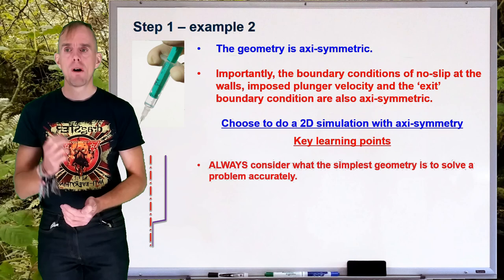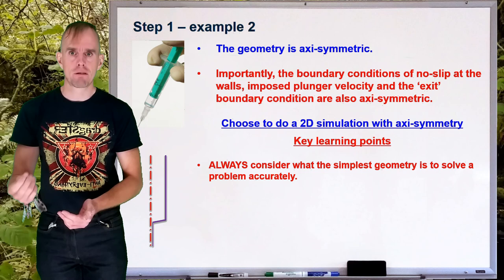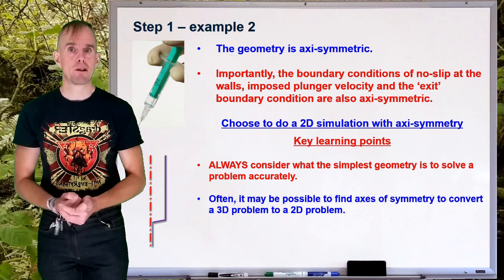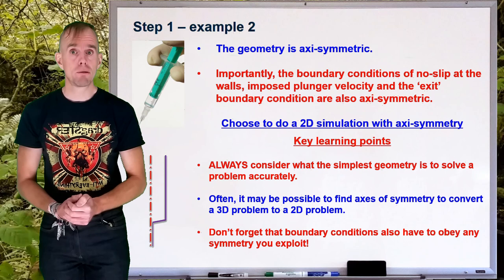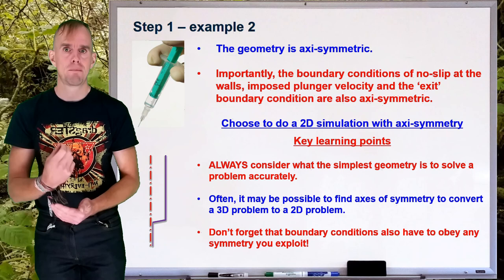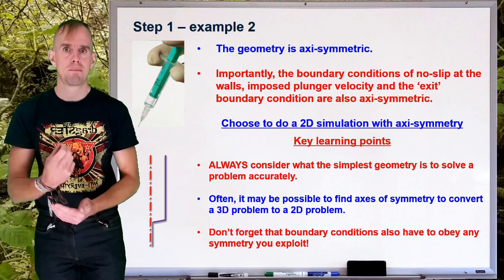So, some key learning points here. Always consider what the simplest geometry is to solve the problem to the required accuracy. It might well be possible to find axes of symmetry to convert a 3D problem into a 2D problem. But a word of caution. When you're doing this, don't overlook the fact that your boundary conditions may not be axisymmetric. You can only make this simplification if both geometry and boundary conditions obey the same symmetry.